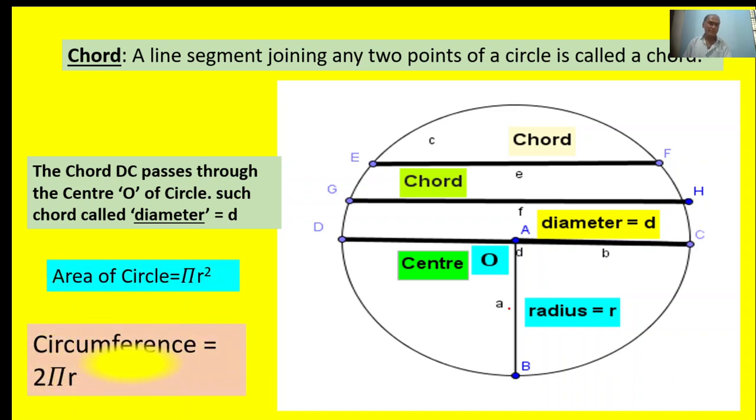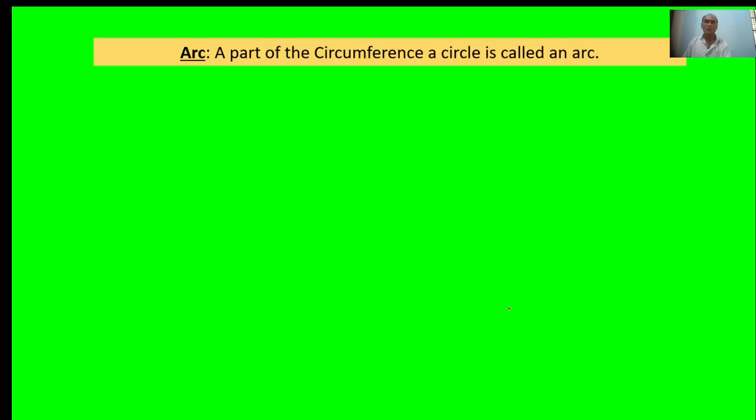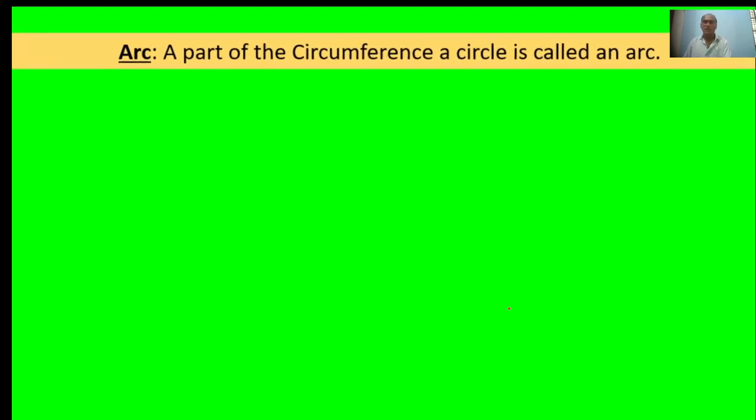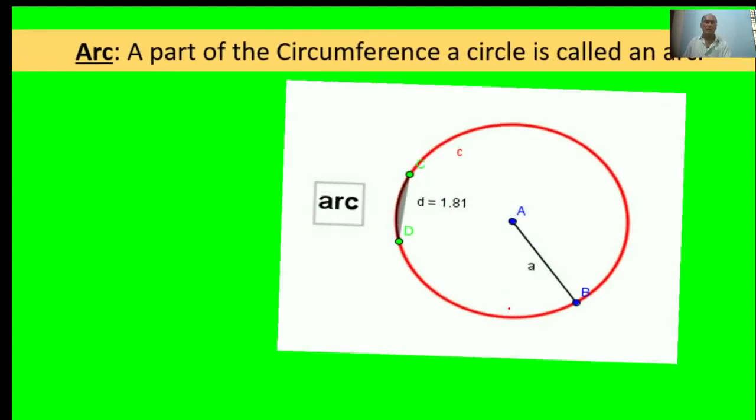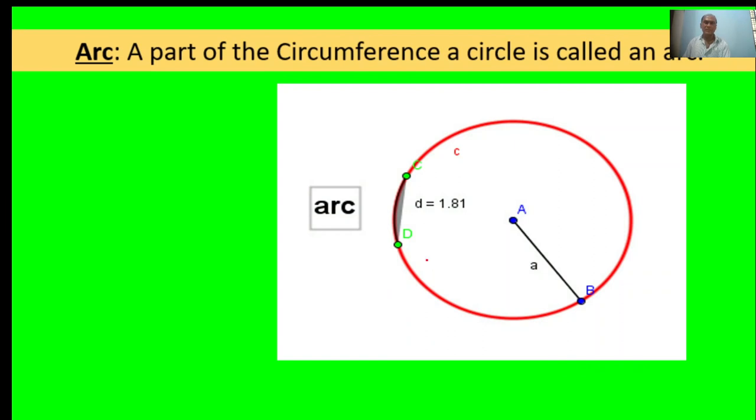Area of a circle is π r squared. Circumference is equal to 2π r. Now, an arc: a part of the circumference of a circle is called an arc. Here in the figure, DC is an arc.